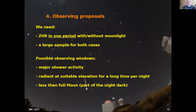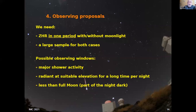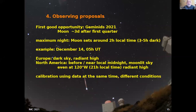What does this mean for our practical attempt? We need a ZHR for one period with and without moonlight — simultaneous observations, obviously not from the same location since you cannot switch the moon on and off — and we need large samples for both cases, so this works only for big showers. Possible observing windows are during major shower activity, since otherwise the sample remains too small, and you must ensure the radiant elevation is high enough for a long time per night. This will only work if it's not full moon itself, otherwise the whole night is bright.